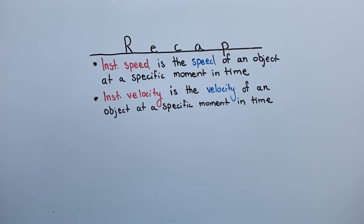So in recap, the instantaneous speed is the speed of an object at a specific moment in time. The instantaneous velocity is the velocity of an object at a specific moment in time. Thank you for watching this video and hope to see you next time.